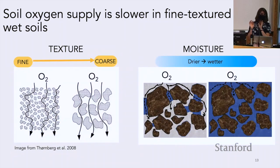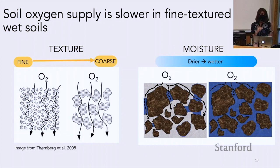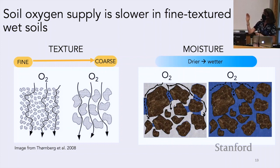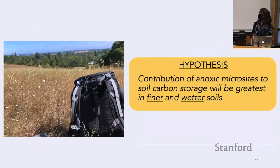A quick soil physics lecture: soil oxygen supply is slower in fine-textured and wet soils. For texture, in a finer-textured soil, the diffusion path length is a lot longer, so oxygen supply tends to be hampered. In terms of moisture, oxygen diffuses 10,000 times more slowly through water than through gas or air-filled pore space. So whenever oxygen encounters a water-filled pore or is trying to diffuse into a waterlogged soil, there's going to be really poor oxygen supply. Because of these paradigms, we hypothesized that the contribution of anoxic microsites to soil carbon storage would be greatest in finer and wetter soils.